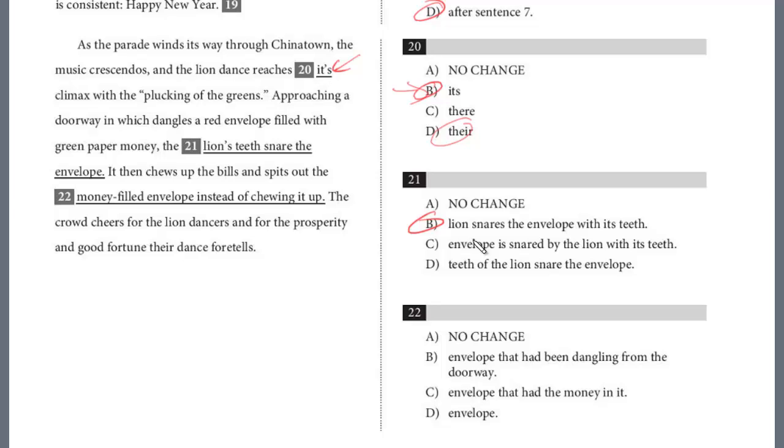We've got one more question in this passage. It then chews up the bills and spits out the money filled envelope instead of chewing it up. The crowd cheers for the lion dancers and for the prosperity and good fortune their dance foretells. So for 22 here, we already were told a red envelope filled with green paper money. It chews up the bills and spits out the money filled envelope instead of chewing it up. This is repetitive and it's also awkward and bulky. We want to make it concise and eliminate the redundancy.